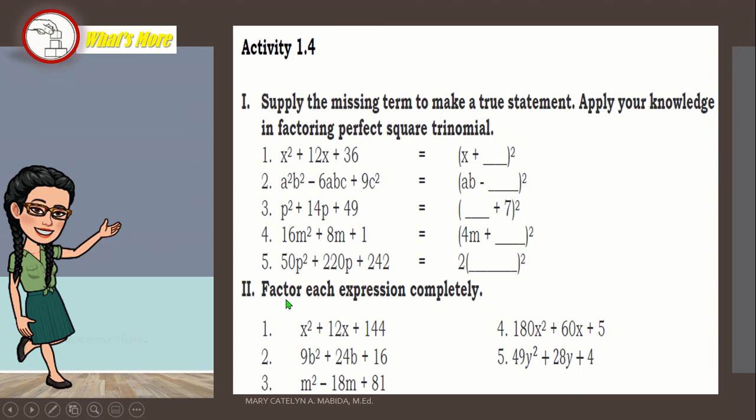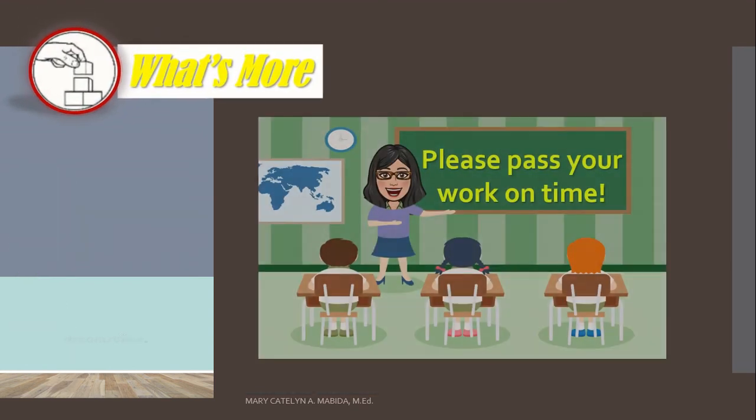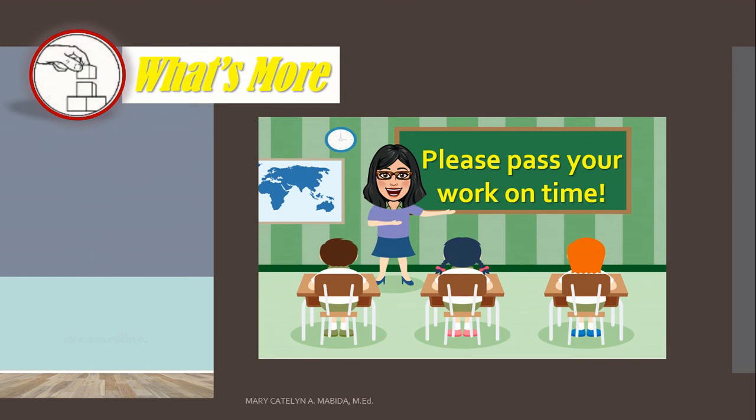Set number 2, factor each expression completely. Now, you have 5 numbers to factor out. Again, do not forget your common monomial factors. Factor them out before you apply your knowledge in factoring perfect square trinomials. And please submit your work on time. Can I count on you? Yay! Thank you very much for the thumbs up.